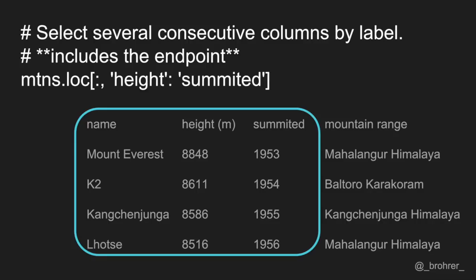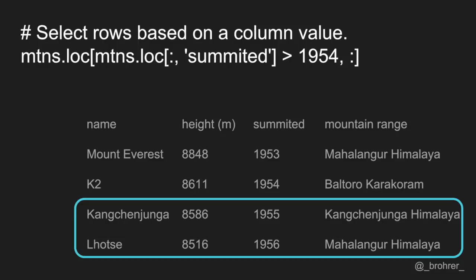In addition, we can select rows or columns where a value meets a certain condition. In this case, we want to find the rows where the values of the summited column are greater than 1954. In the rows position, we can put any Boolean expression that has the same number of values as we have rows, and we can do this for the columns as well if we wished.